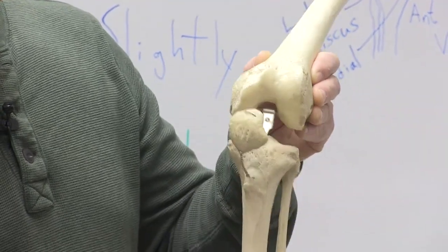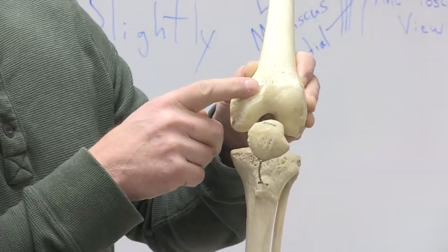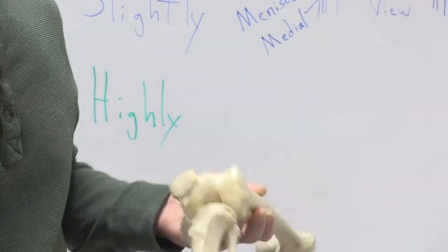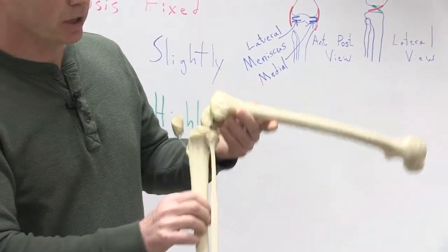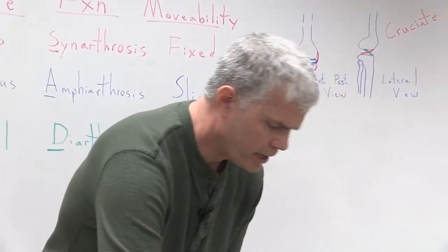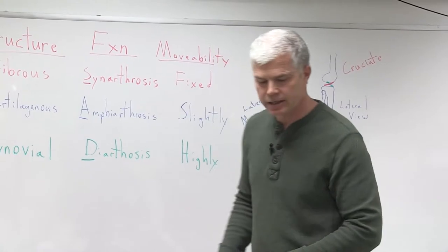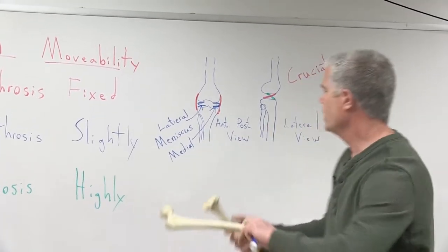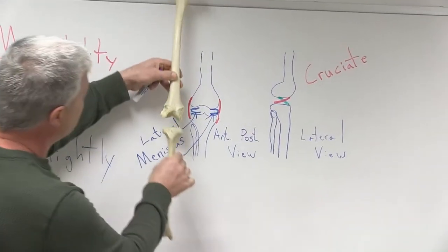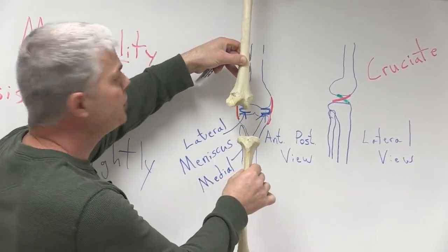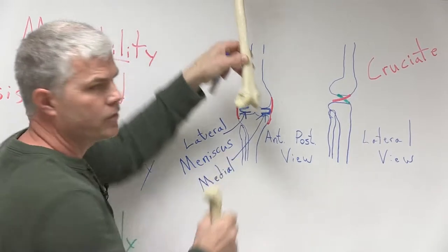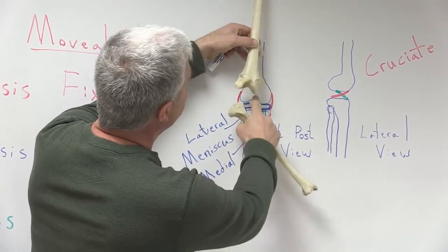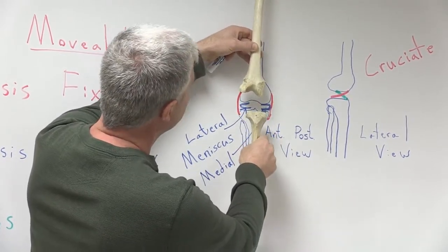In this joint, it's the tibia and the femur and the patella that come together to form this particular joint. This bone on the lateral side of your leg is the fibula for reference. Now let's look at some of the tendons that stabilize this joint — a little bit more of the substructure. Here's the same structure, and now we're looking at this joint in an anterior to posterior view. Lateral is over on this side, and medial is over on that side.